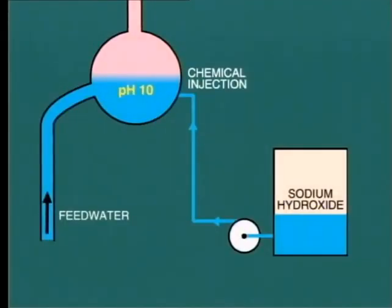This injection of caustic does achieve the objective of raising boiler water pH value, but it also has some negative effects. One is that we are adding yet more solids to the boiler water.